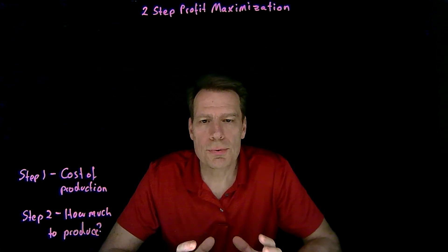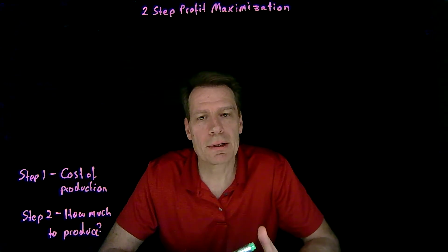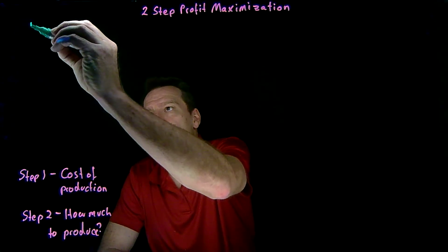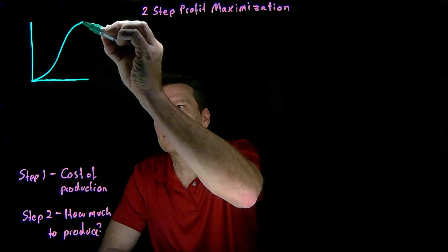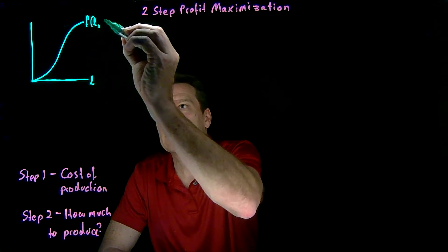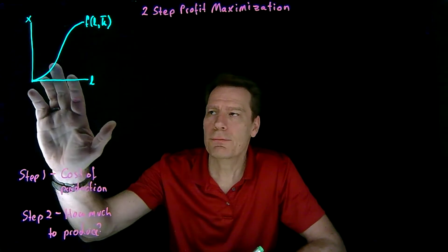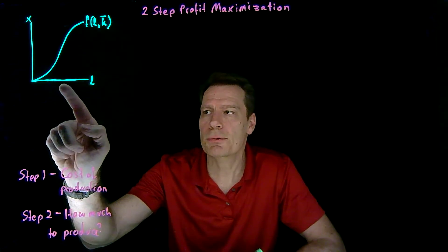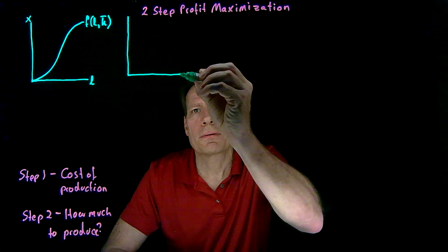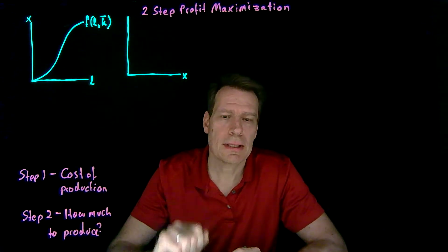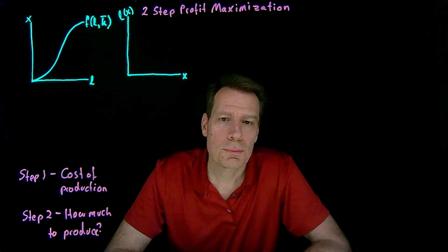Let me illustrate that two-step method in the simplest possible case first — the case where capital is held fixed in the short run. In the short run, firms are going to operate on the short-run production function that tells us, for any amount of labor given a fixed level of capital, how much output I can produce. Now to think about costs, I want to reverse what this picture tells me. Instead of asking for any given level of labor how much can I produce, I'd really like to ask: for any level of output, how much labor is it going to take?